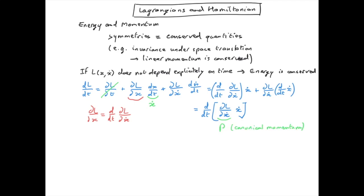So we see that we have a time derivative on the left-hand side and also a time derivative on the right-hand side. Combining everything to the left-hand side, we can write this function pẋ - L, which is what we call the Hamiltonian, and it is usually written with the letter H.